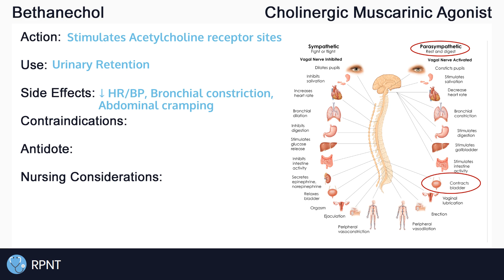Now that we know that the side effects of bethanachol are related to the rest and digest nervous system, we can see that there will also be some contraindications to the drug. One example of this would be in asthmatic clients — bethanachol will already constrict the bronchi, which is something that we definitely don't want to have happen in someone with asthma.